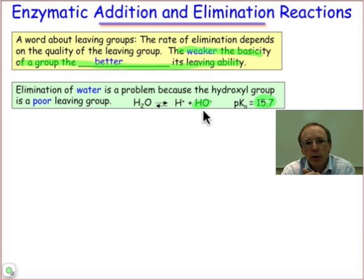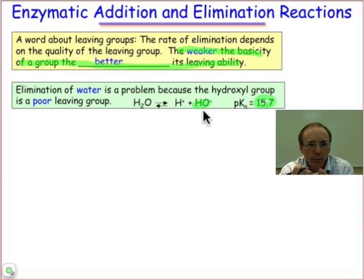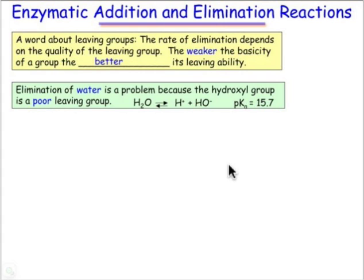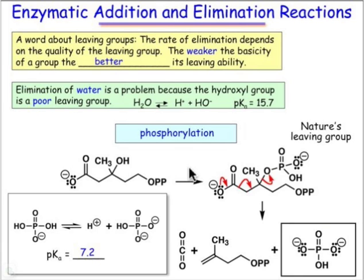We know a couple of ways around this dilemma. One is we can do elimination by beta elimination, and hydroxide would be an acceptable leaving group. And the other thing we could do is convert that hydroxide into a better leaving group. Nature's choice of converting that hydroxide into a better leaving group is phosphorylation. And here you see, in a step in terpene synthesis — isoprene synthesis — this hydroxyl group can be eliminated by converting it into a phosphate.